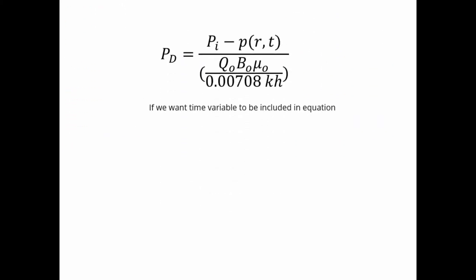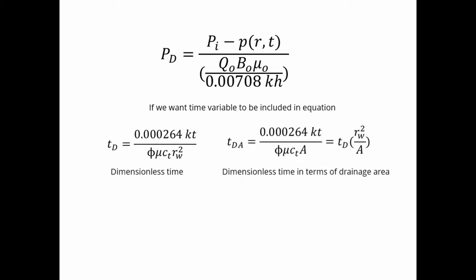If we want time variables to be included in the equation, we have dimensionless time. Also, we have dimensionless time in terms of drainage area, where A is total drainage area.